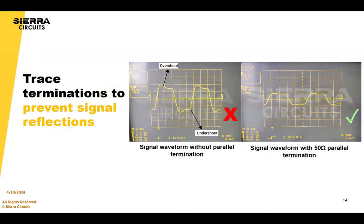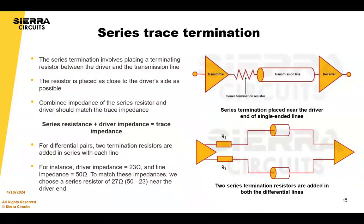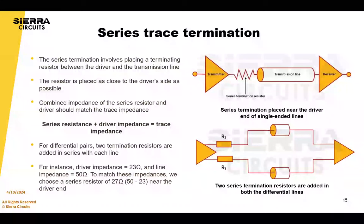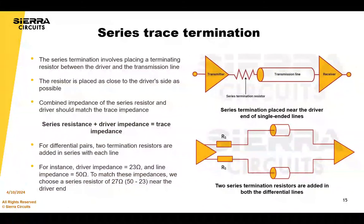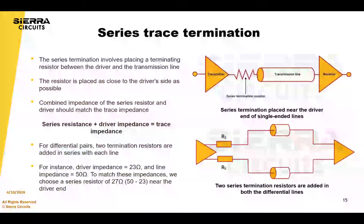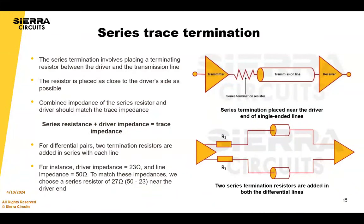We're going to switch topics to trace terminations to prevent signal reflections. First, we have series trace terminations, which involves placing a terminating resistor between the driver and the transmission line. Place the series resistors close to the driver's side and choose a value so that the combined impedance of the resistor and driver matches the trace impedance. For example, if you have the driver impedance as 23 ohms and the line impedance as 50 ohms, implement a series resistor of 27 ohms near the driver.